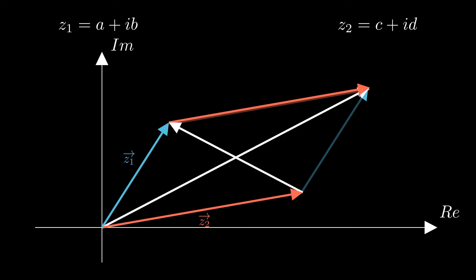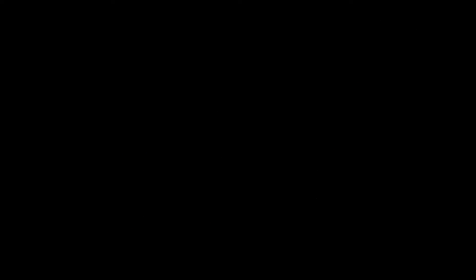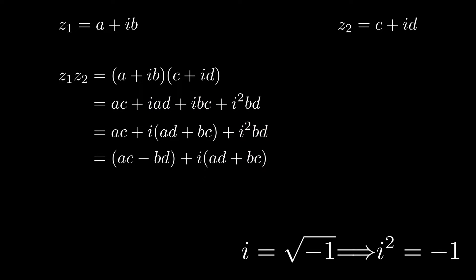So there's two simple ways of working with addition and subtraction of complex numbers, numerically and geometrically. Multiplication follows the usual rules for expansion of brackets, but we need to remember that i squared is equal to negative 1.